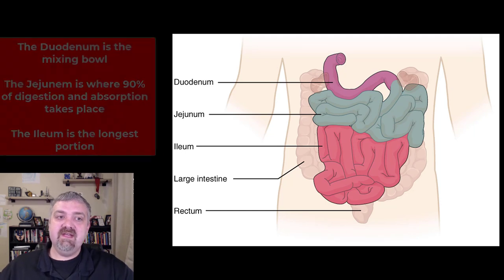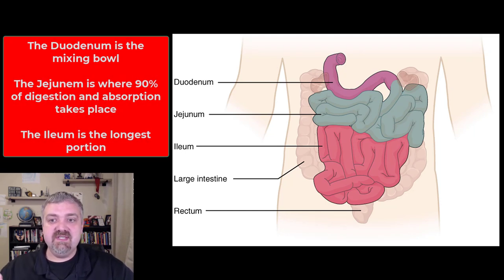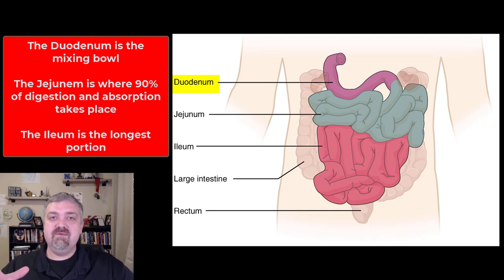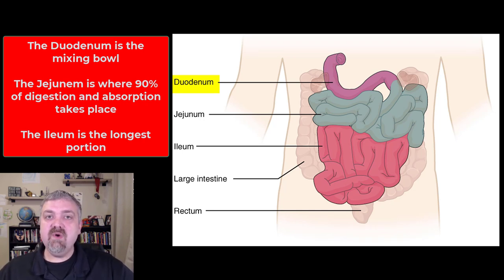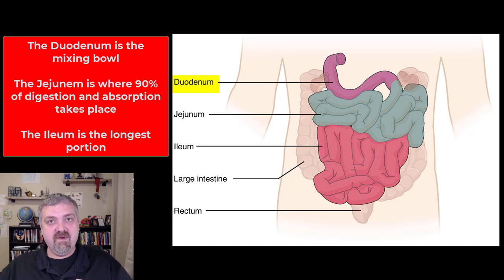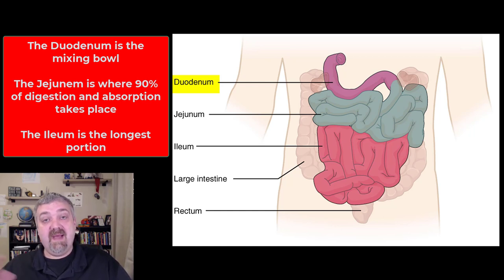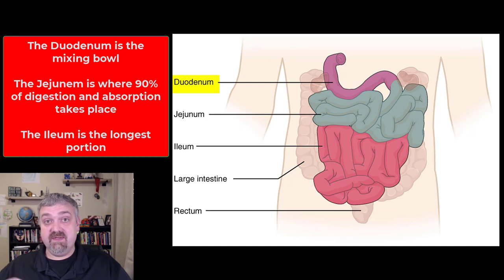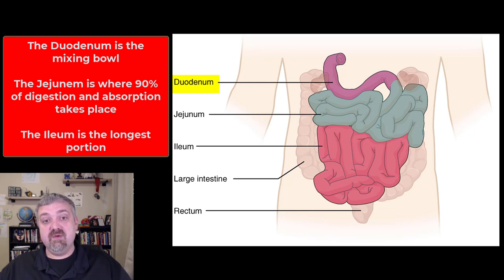Let's dive into the three key parts of the small intestine. You can see them color coded here. First you have the duodenum. The duodenum I like to call the mixing bowl, and that's because the duodenum is going to be where the chyme from the stomach is mixed with the bile from the liver and gallbladder, the bicarbonate from the pancreas, and the digestive enzymes from the pancreas. So it's a mixing bowl — it's going to take all those things and mix them together.